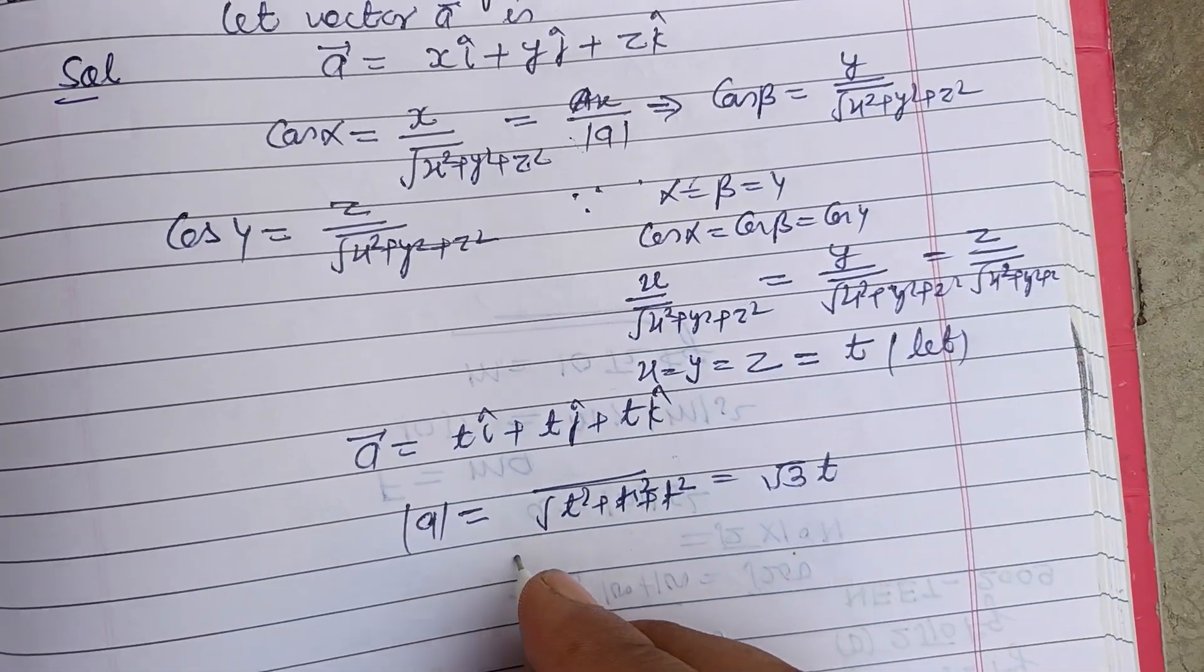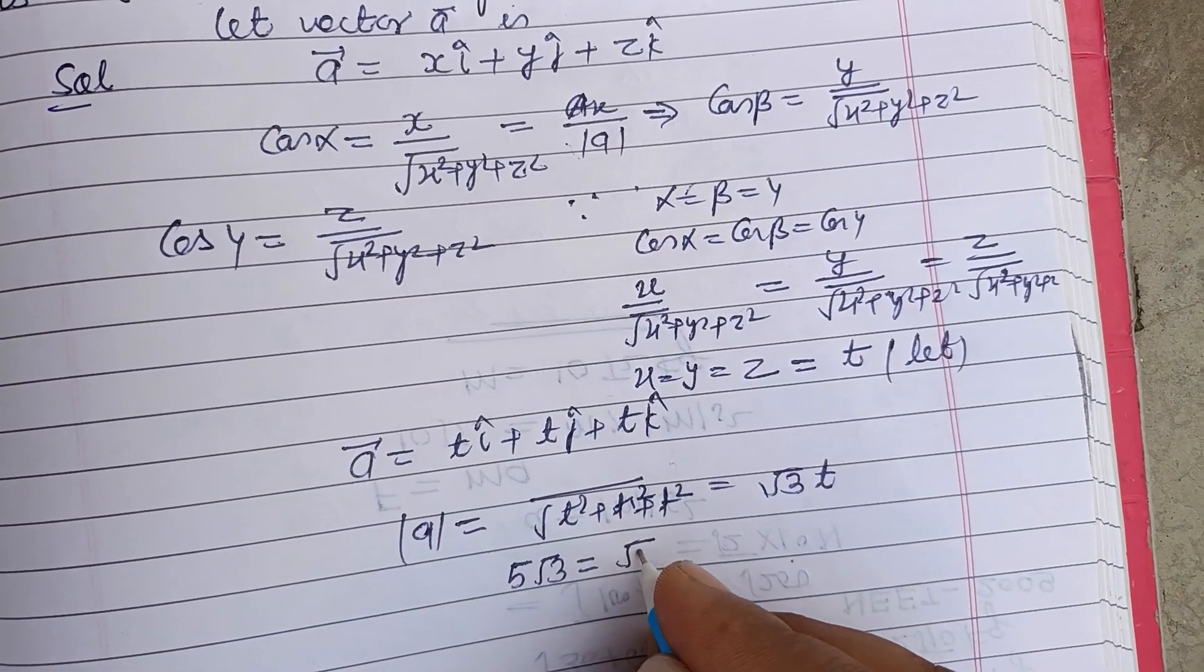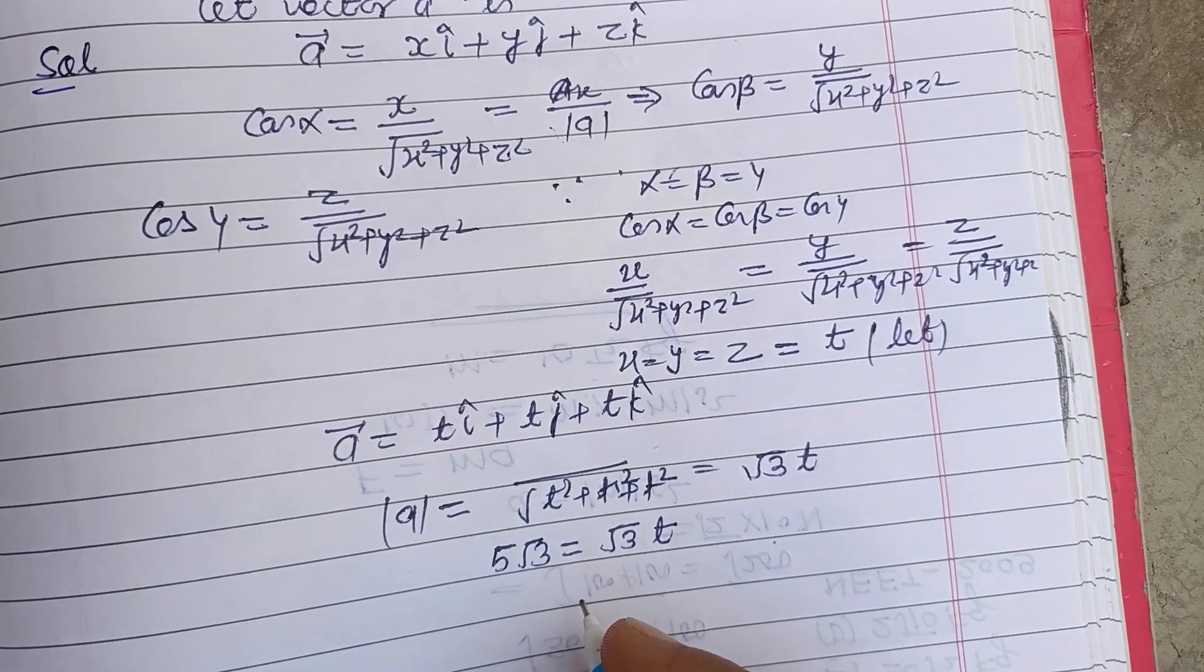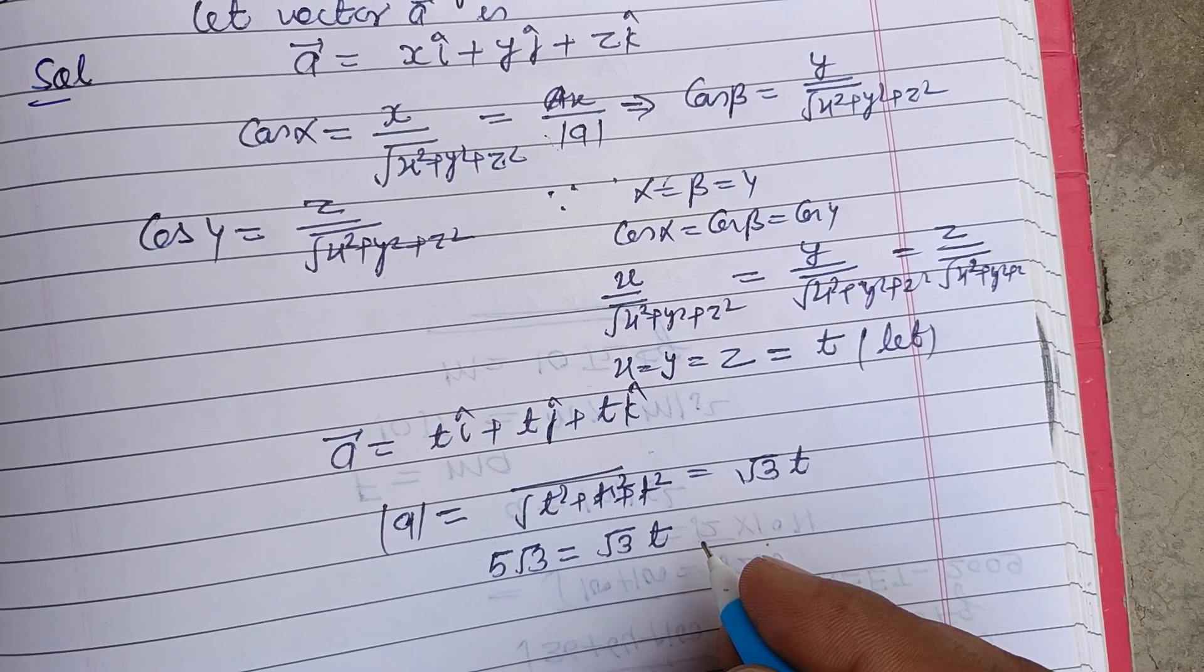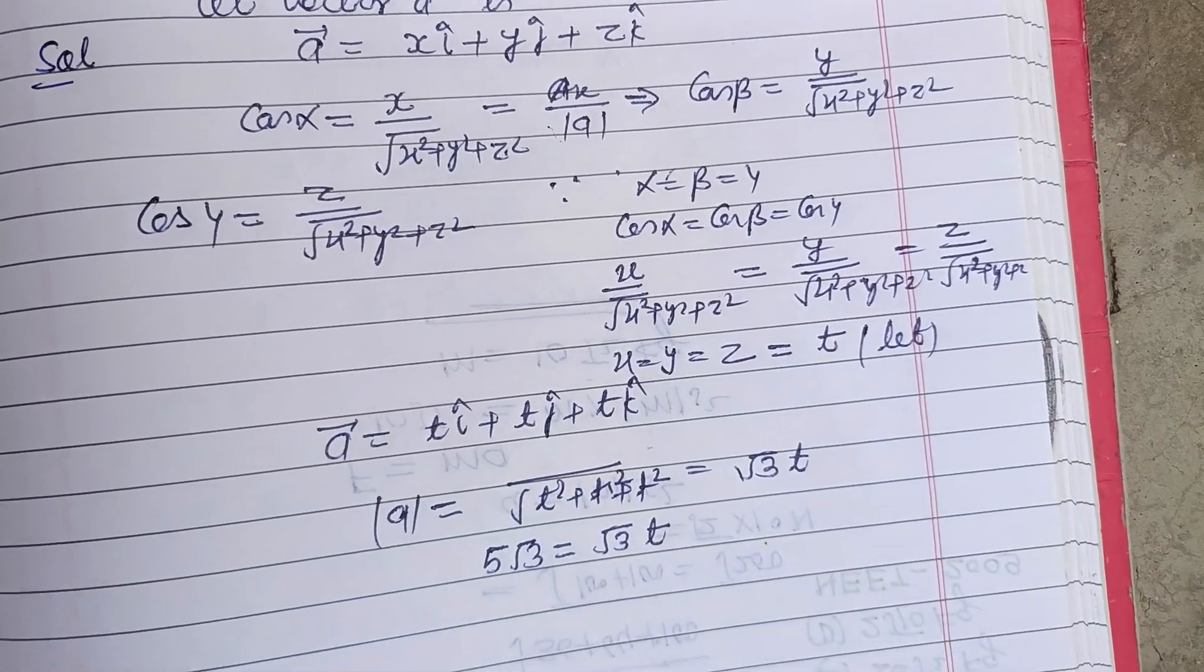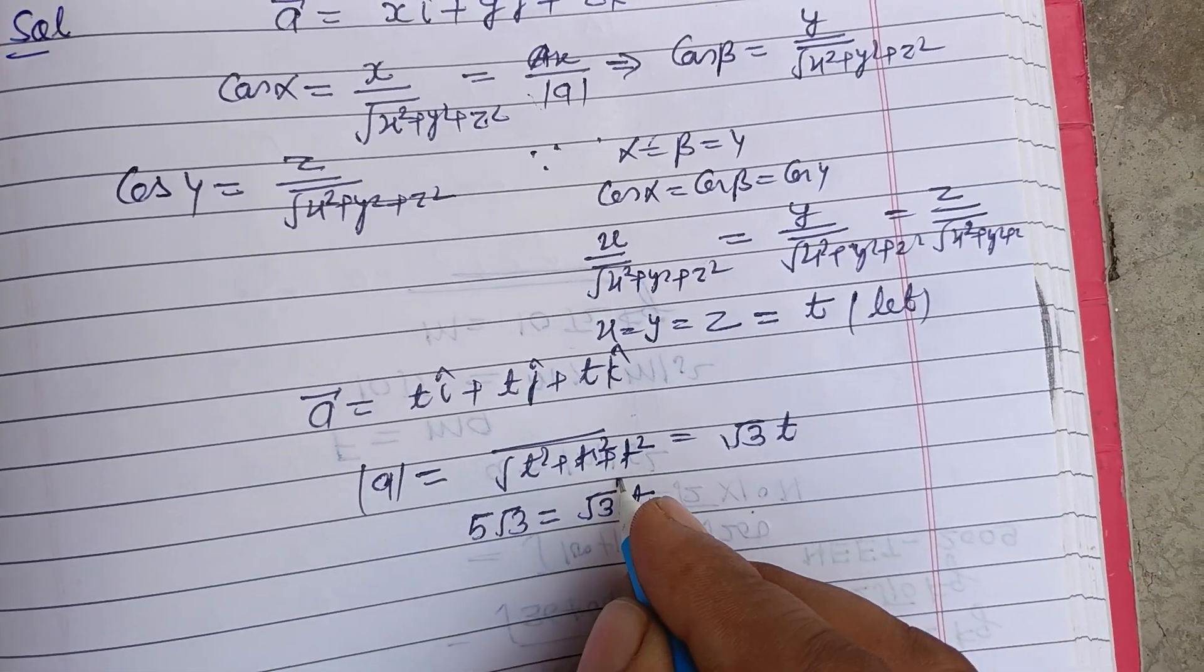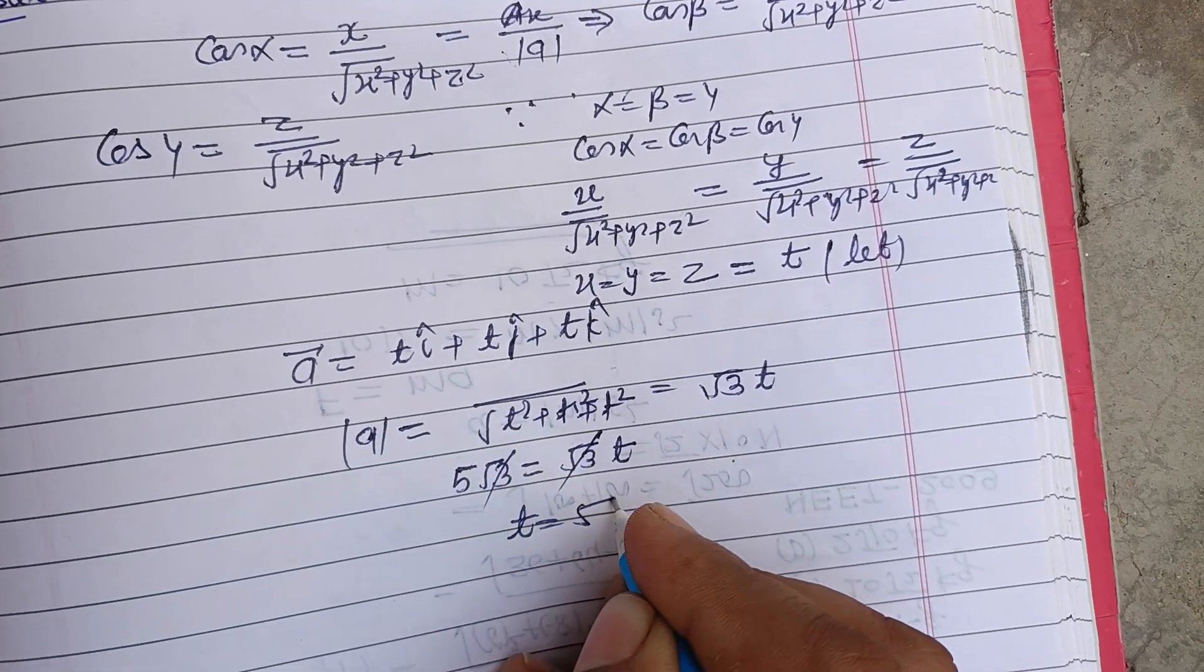So root 3 t equals 5 root 3. Root 3 cancels, so t equals 5.